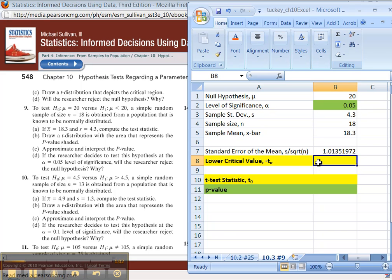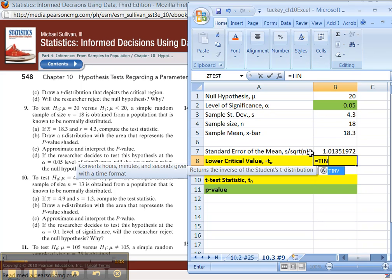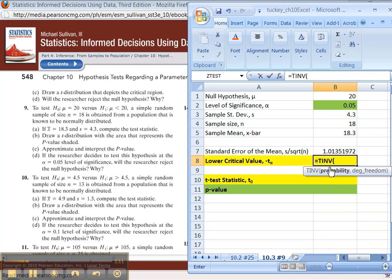Alright, so now I've got to do the critical value. Okay, so the critical value is t inverse of probability degrees of freedom.